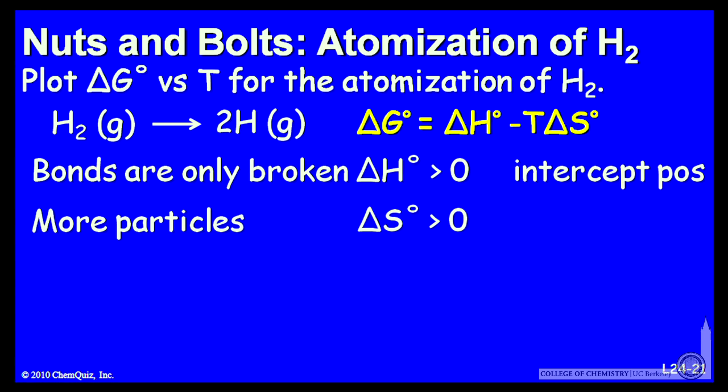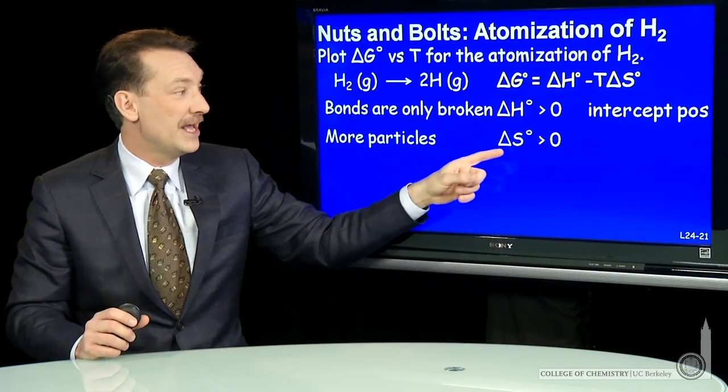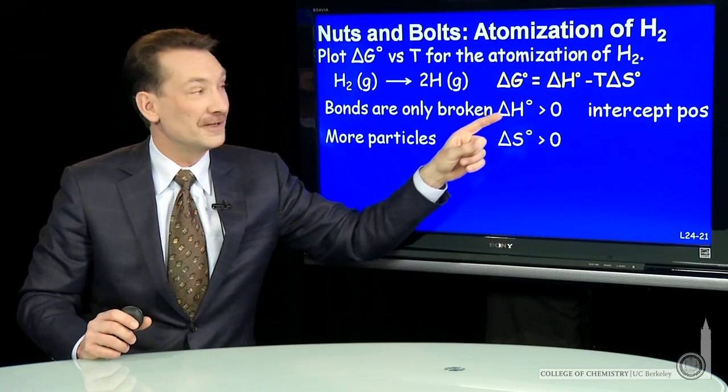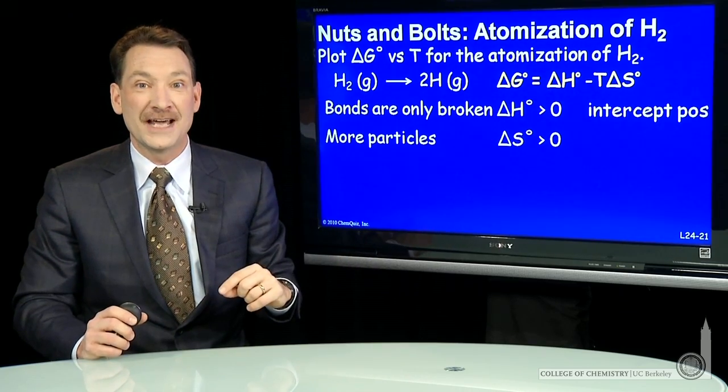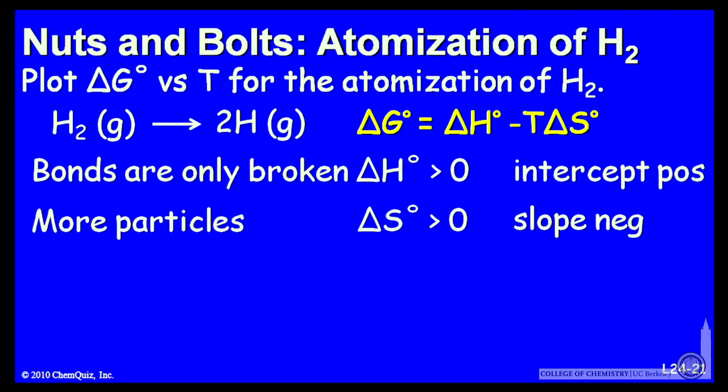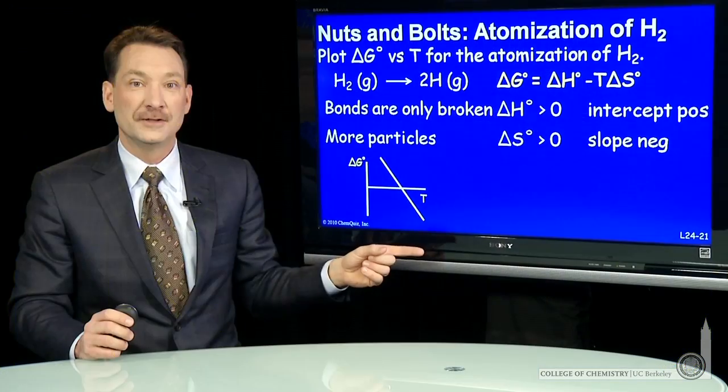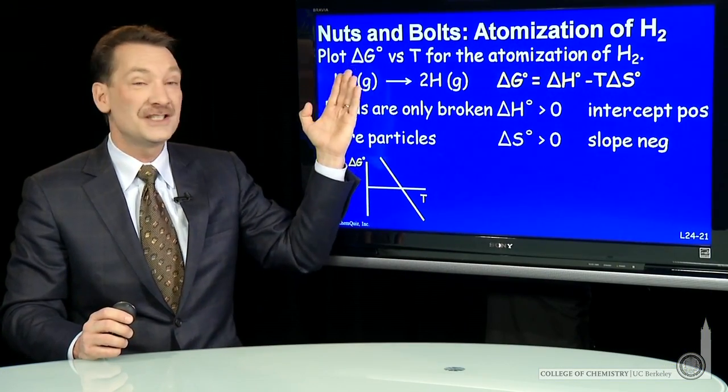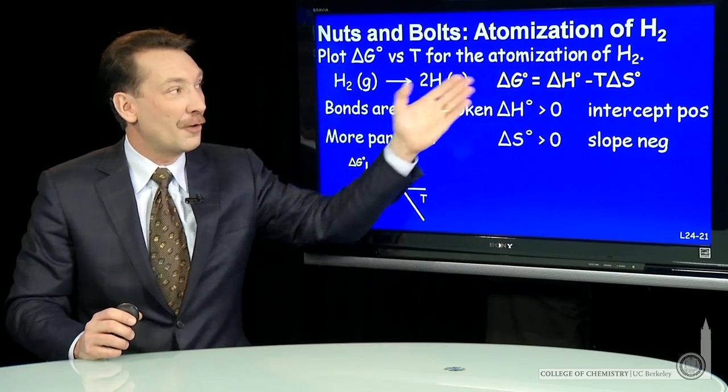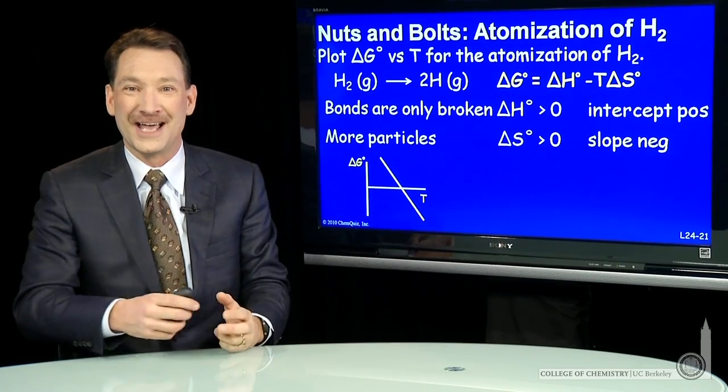So I have a positive y-intercept for this straight line. And delta S is positive, so T is always positive. So this negative sign means the slope will be negative. So I can sketch out a plot of delta G standard versus T with a positive y-intercept and a negative slope. So this is just a sketch of what the plot of delta G standard versus T looks like for the atomization of hydrogen gas.